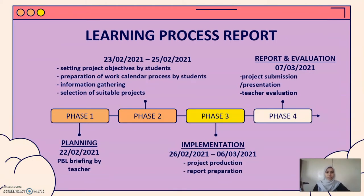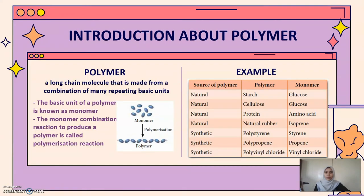This is the learning process report for my project. What is polymer? Polymer is a long-chain molecule that is made from a combination of many repeating basic units. The basic unit of a polymer is known as monomer. The monomer combination reaction to produce a polymer is called a polymerization reaction. There are some examples of sources of polymer and their monomers.